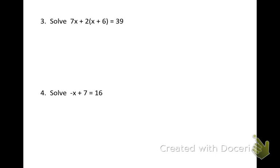All right, in number three, it looks like we have parentheses going on. So remember, that always means to distribute. We're going to distribute this 2 to everything in the parentheses. So we get 7x plus 2x plus 12 equals 39.